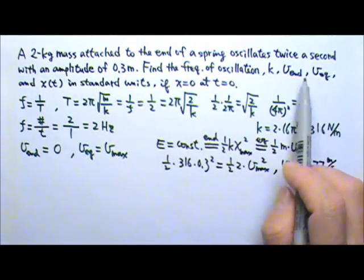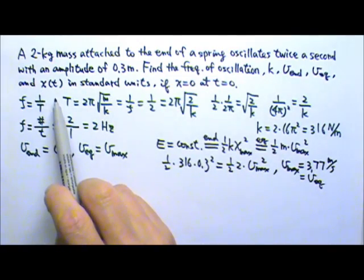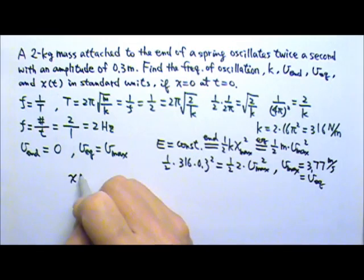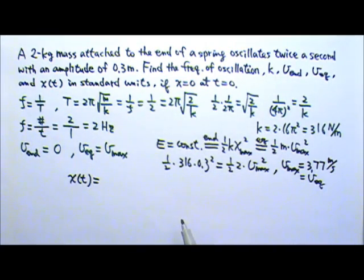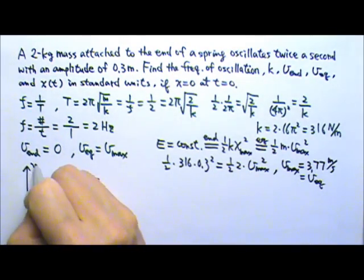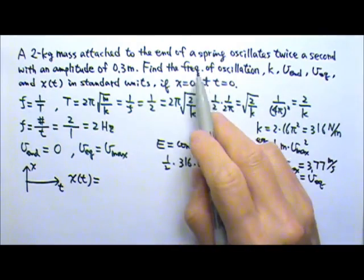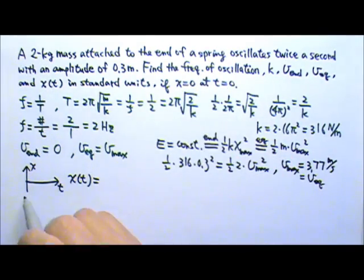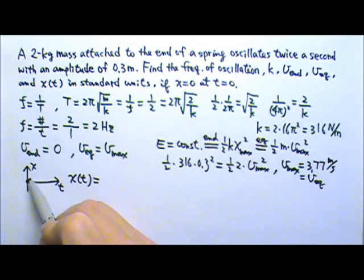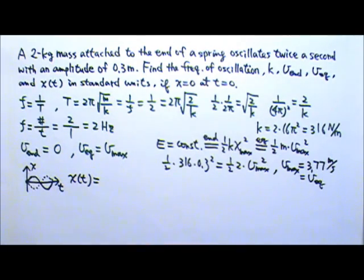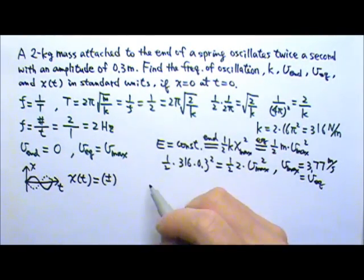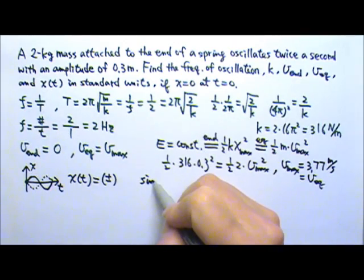Now we find the position as a function of time. We know it is either a sine or cosine function. Since x equals 0 at t equals 0, it must be a sine function — either positive or negative sine.